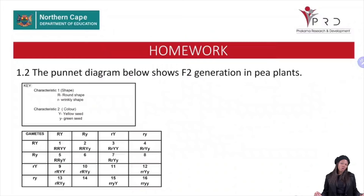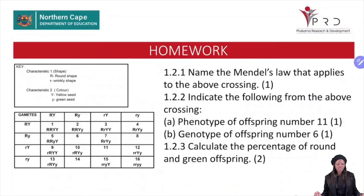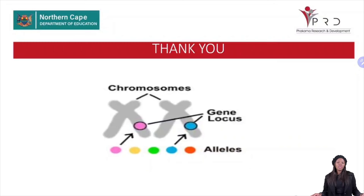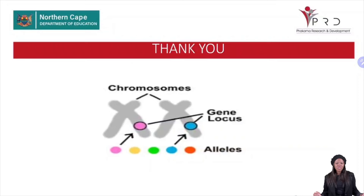In summary, we learned about genetics: the definition, passing on of characteristics from parents to offspring determined by genes. We covered heterozygous and homozygous genes, monohybrid and dihybrid crosses, the two laws of Mendel — law of segregation and law of independent assortment — and quantitative versus qualitative characteristics. There is homework to complete, and solutions will be provided when we return. Thank you for listening — I hope you gained something and will be able to apply this knowledge in your examinations.